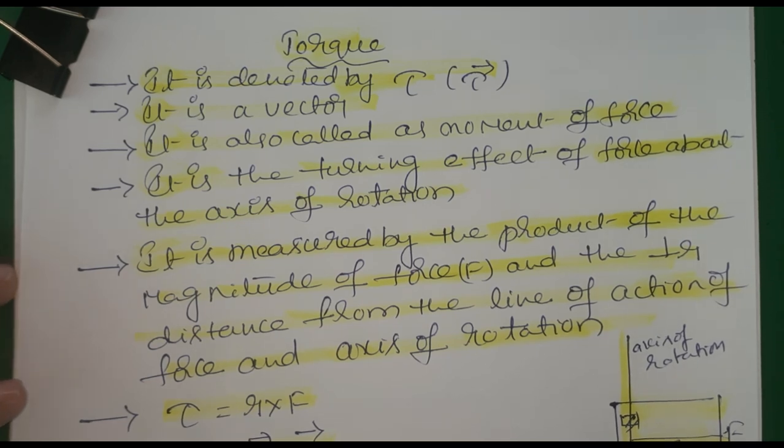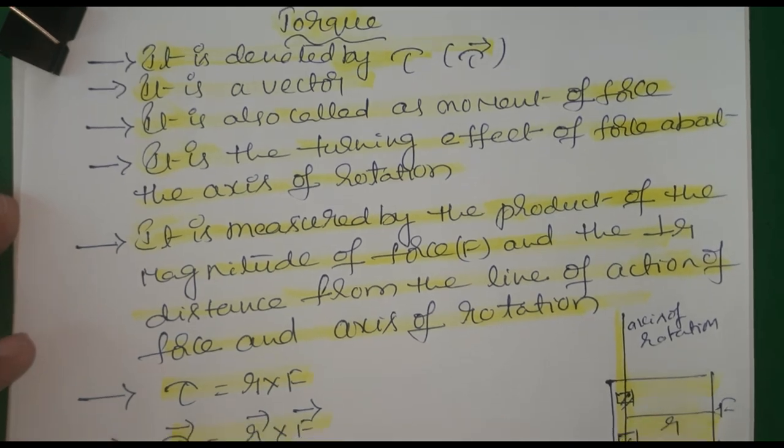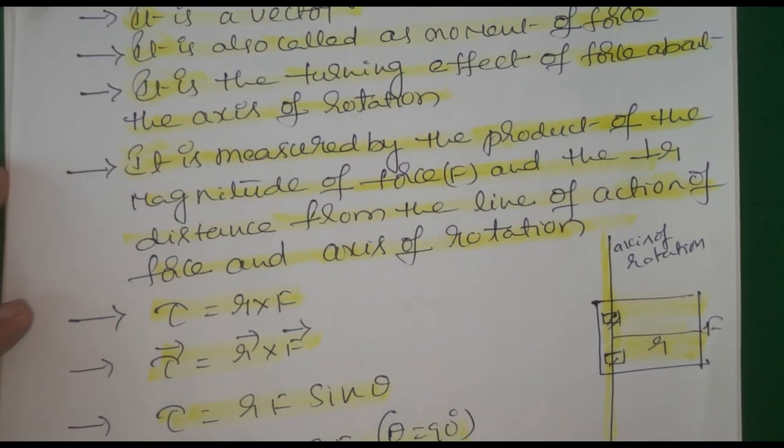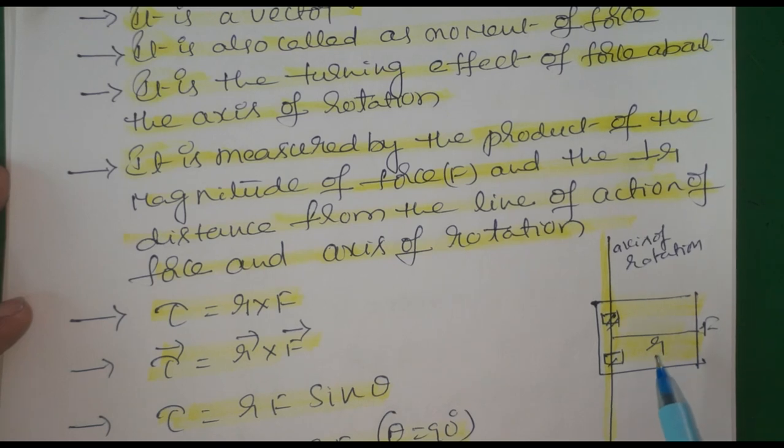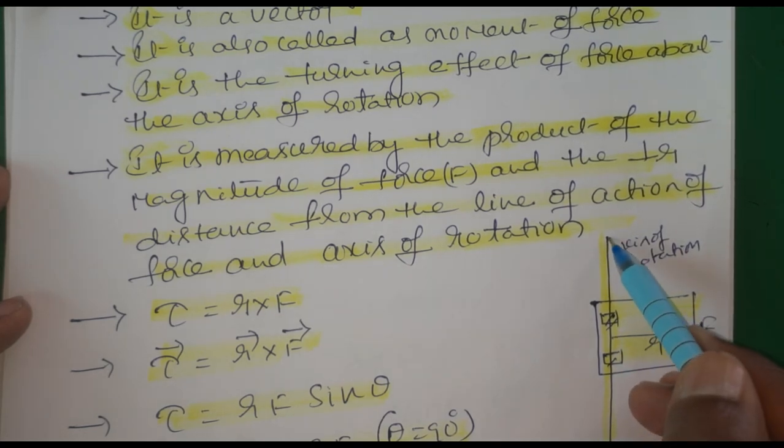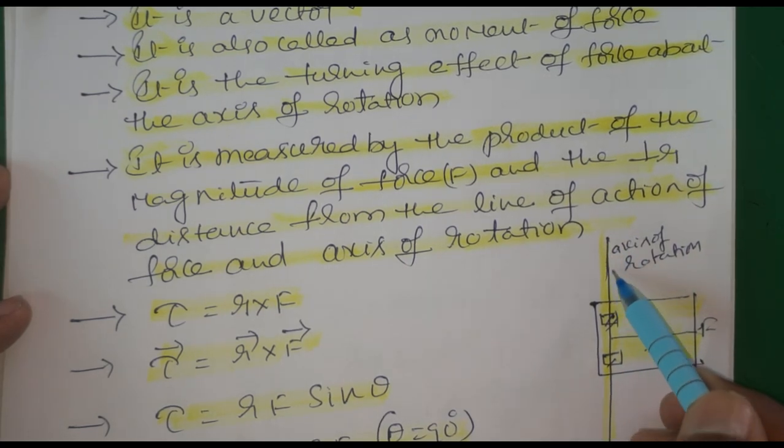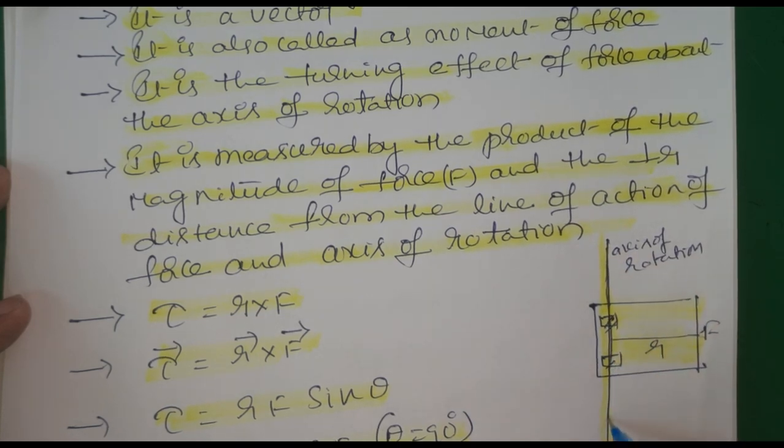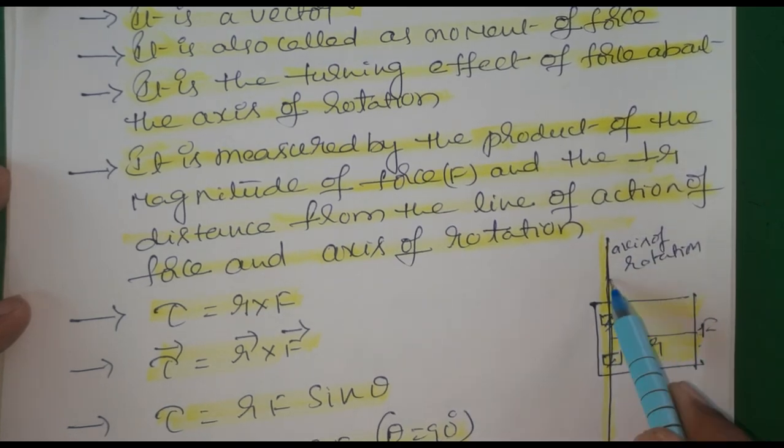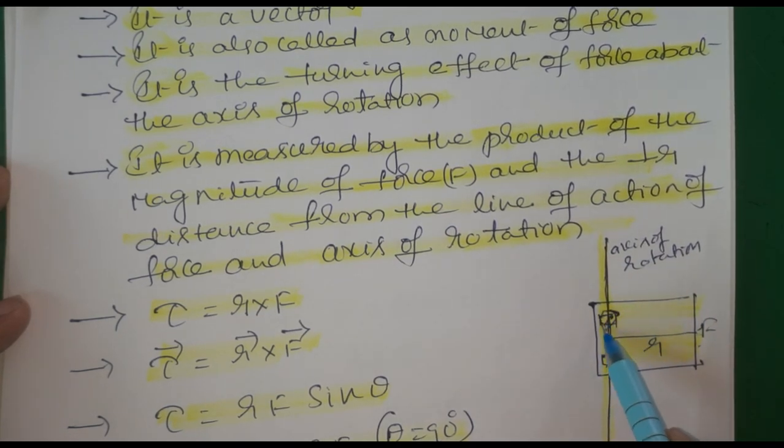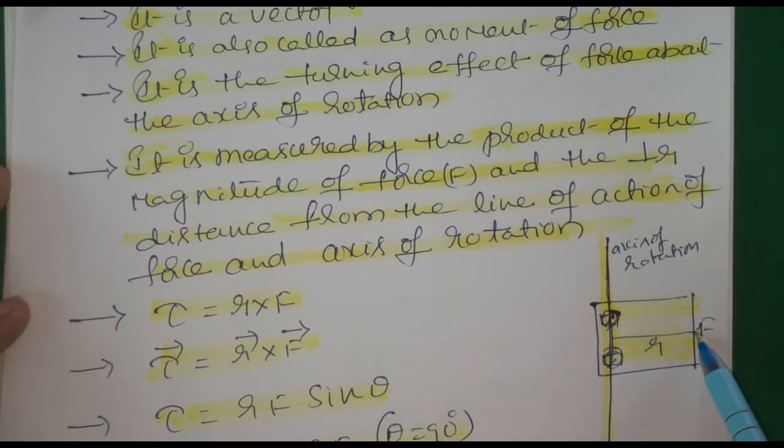The best example is opening or closing the door. When we have a door entrance, we can clearly understand through this example. When we see the door, it rotates about one fixed point through an axis of rotation. This point is fixed, this is free. The hinge and screw hold it. Here we apply force to open or close the door.